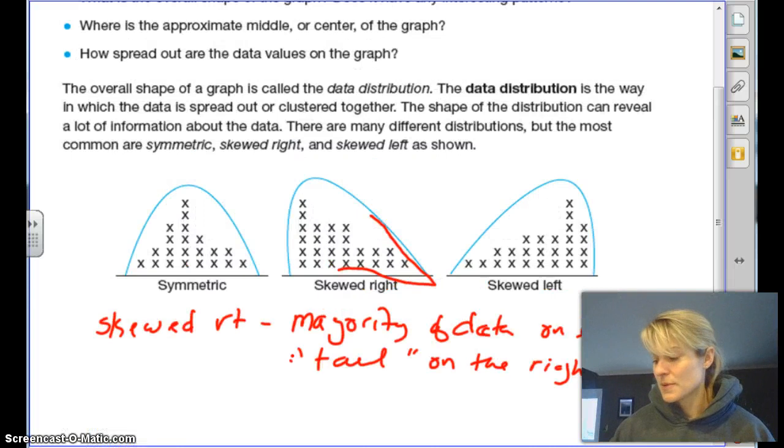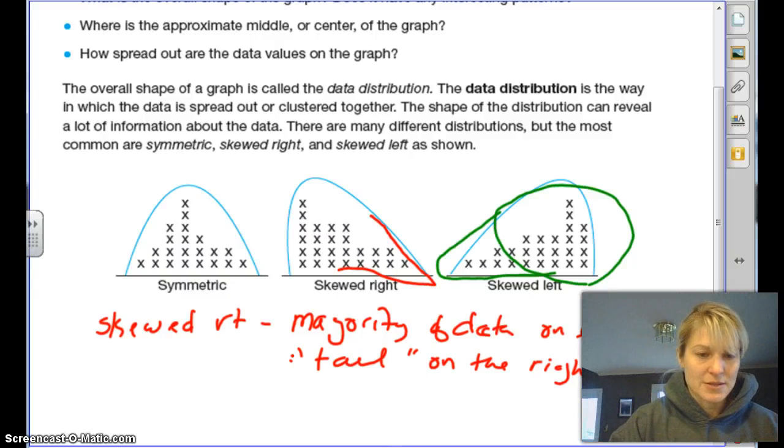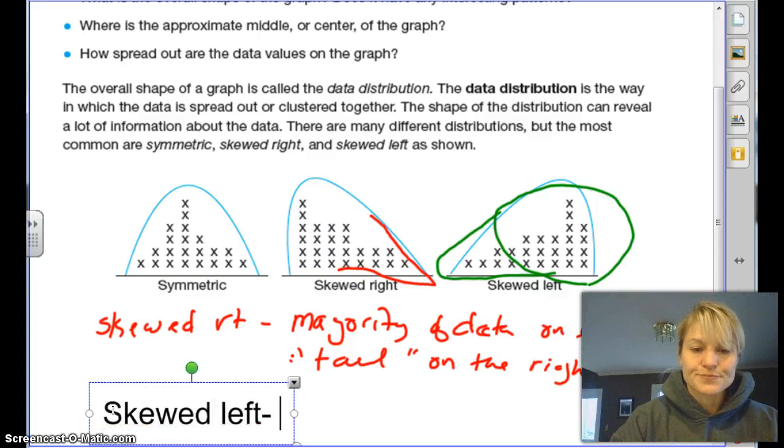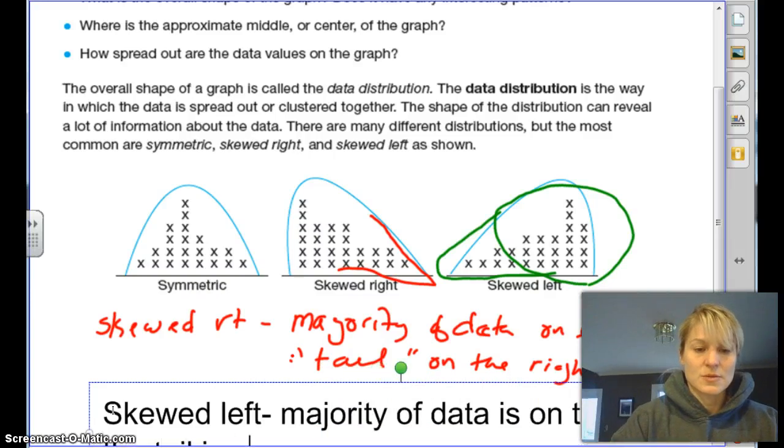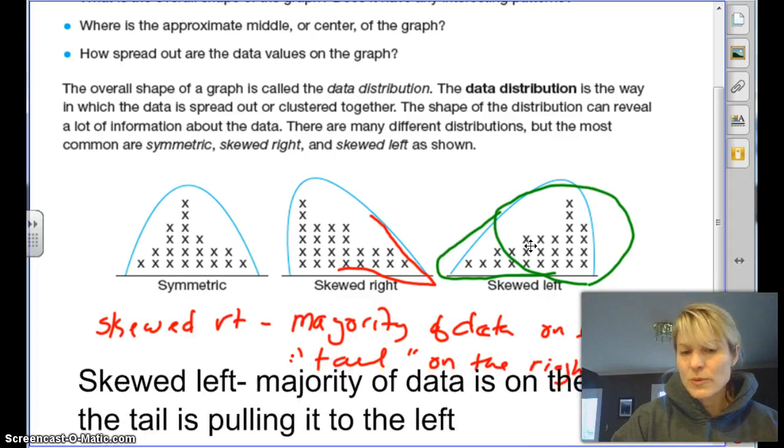And then you basically have the opposite for a skewed left. This is skewed left. So the majority of my data is down here, and then there's this little tail pulling it just to the left this way. It's kind of like someone's taking it and pulling it like that. There's a few pieces of data. So we want to basically say the same thing. My writing's terrible in here. So we have skewed left and the majority of data is on the right, and the tail is pulling it. So that's why we say left because a little bit is just pulling it to the left a little bit. Everything would be right on here on the right hand side except this little data pulls it over that way.